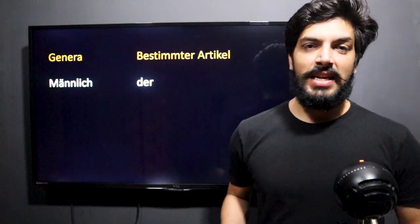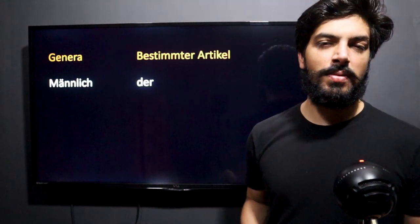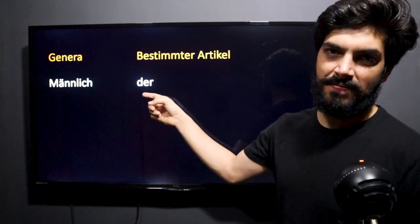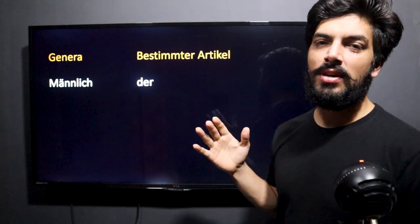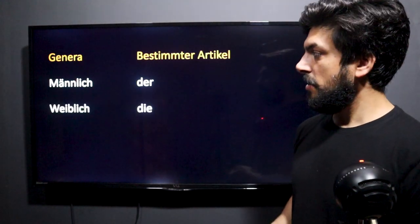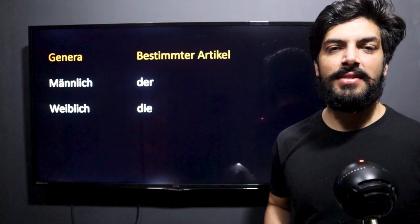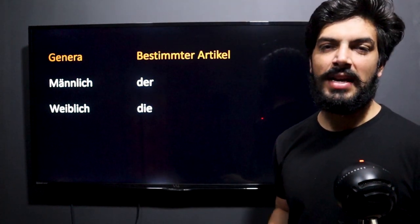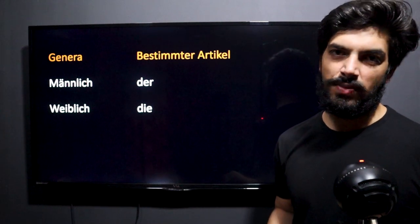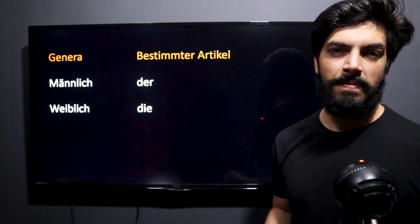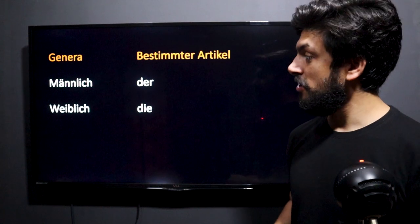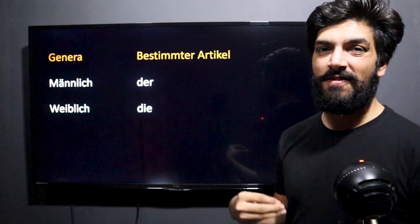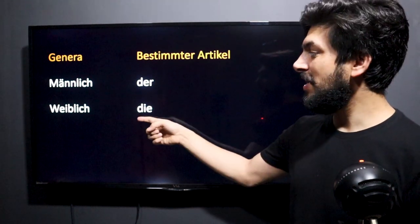The first one is männlich — männlich is the German word for masculine. In that case, the definite article is 'der.' Weiblich is feminine — for anything feminine they use 'die.' So in English we say 'the woman' and 'the man' the same way, but in German we don't do that. The German word for man is Mann, so it's 'der Mann,' and Frau is woman, so it's 'die Frau.'